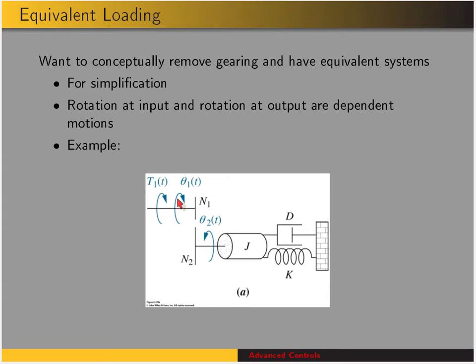We also do this because we don't have independent motions. In this figure we have two displacements, theta 1 and theta 2. While they have different values, they're not independent — theta 2 is proportional to theta 1, related by the gear ratio. We can't move theta 1 and hold theta 2 fixed, or vice versa. So there is only one independent motion for this system.